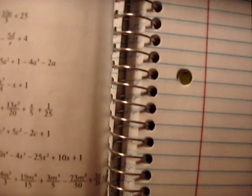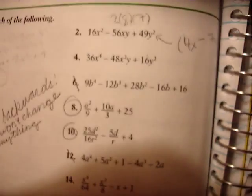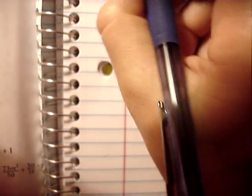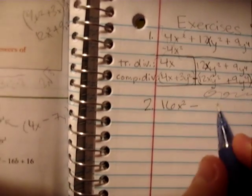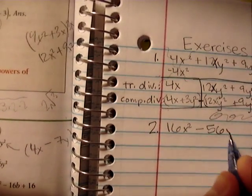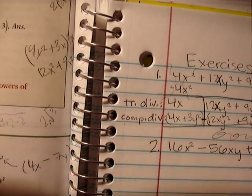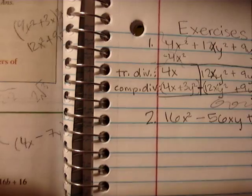Okay. All right, let's do problem number 2. 16x squared minus 56xy plus 49y squared. Okay, first step, take the root of this.